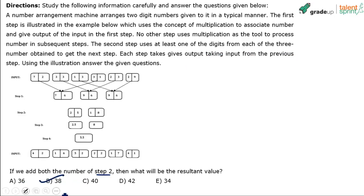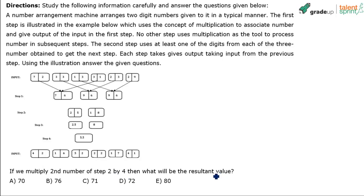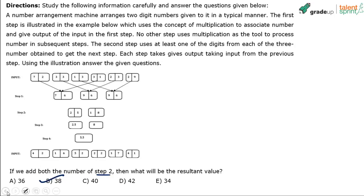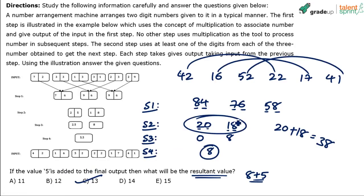Third question: if you multiply the second number of step 2 by 4, what will the resultant value be? The second number of step 2 is 18. Multiply 18 by 4 — 18 times 4 equals 72. So the answer is 72, which is option D.